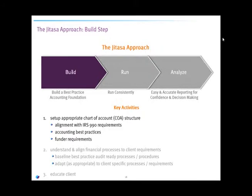When you have the right people, processes, technology, and systems, it's about putting in place proper activities through all three resources — starting with setting up the appropriate chart of accounts structure, what we call COA. It's important to make sure your COA aligns to your 990 requirements from the IRS, accounting best practices, and funding requirements. When all that's put in place, it provides a nice foundation going forward.